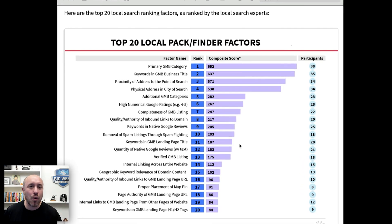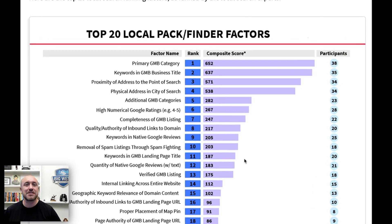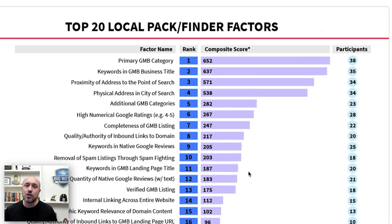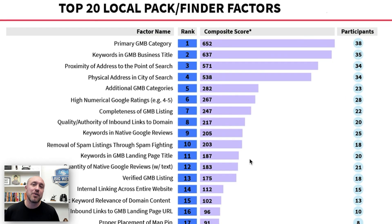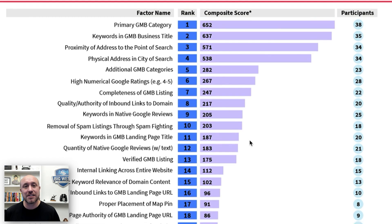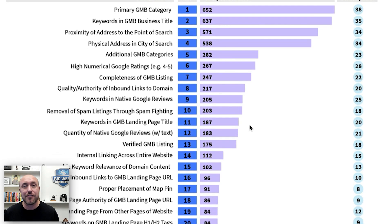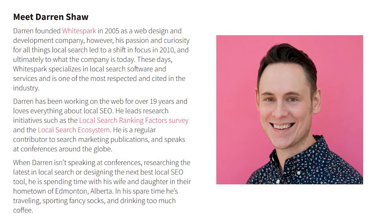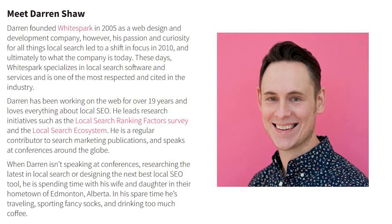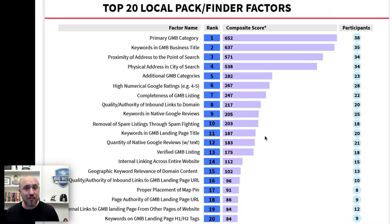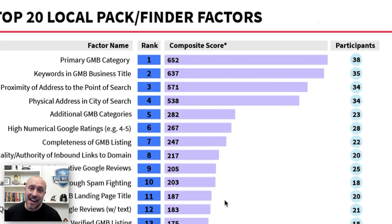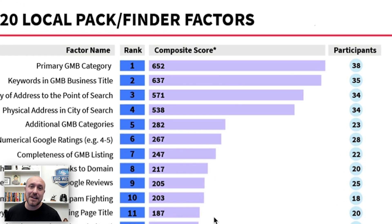Let's look at this chart. This is the top 20 ranking factors when it comes to local SEO or Google Business Profile ranking. This list was compiled by interviewing local SEO experts and what they thought were the major ranking factors. It was compiled by Darren Shaw over at whitespark.ca, who is one of the most respected authorities when it comes to Google My Business. Let's check out the very first ranking factor — it is your primary business category, your primary GMB category.